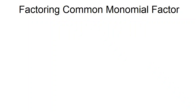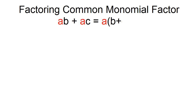Factoring common monomial factor. A polynomial having this form AB plus AC has a common monomial factor. To factor, factor out the greatest common monomial factor, then divide each of the terms by the common monomial factor to find the other factor. AB plus AC is equal to A times the quantity B plus C.